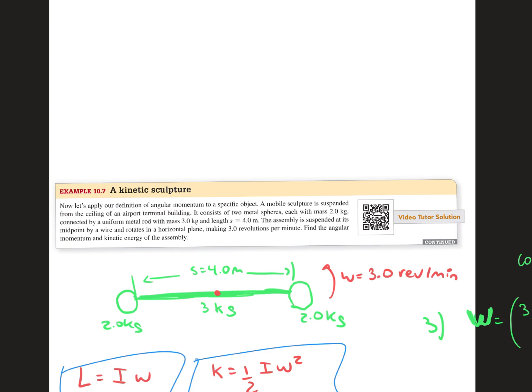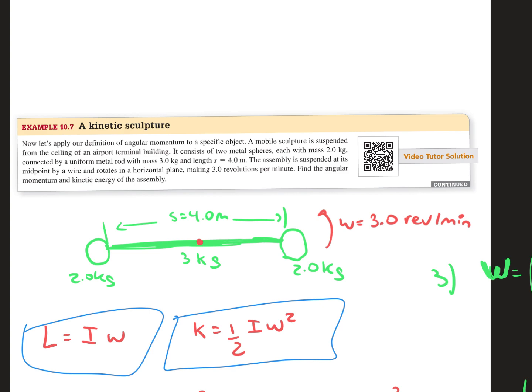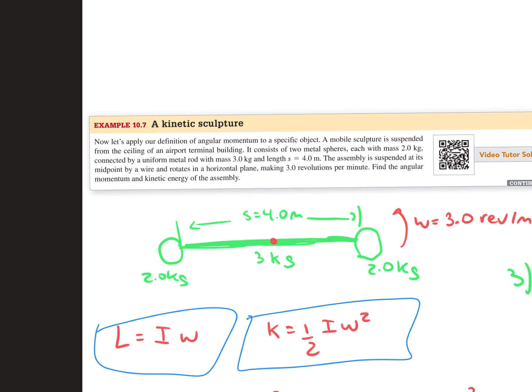In this problem we have a mobile sculpture that has been suspended from the ceiling of an airport terminal building. It consists of two metal spheres, each with a mass of 2 kilograms, connected by a uniform metal rod with a mass of 3 kilograms and a length of 4 meters.